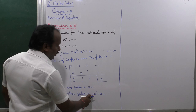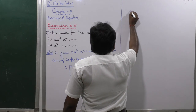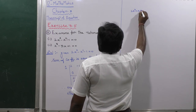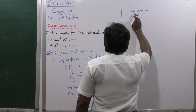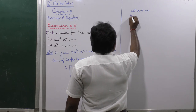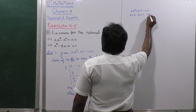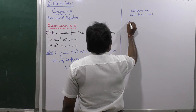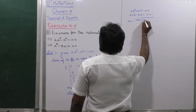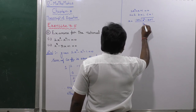So 2x² plus x plus 1 equals 0 is a quadratic equation. By using the quadratic formula, with a equals 2, b equals 1, and c equals 1, we apply: x equals minus b plus or minus the square root of b² minus 4ac, all divided by 2a.